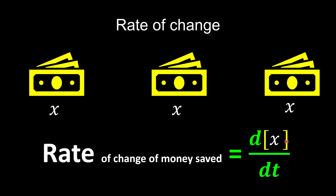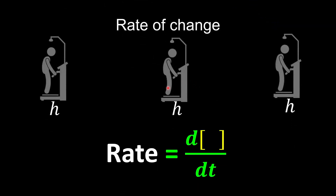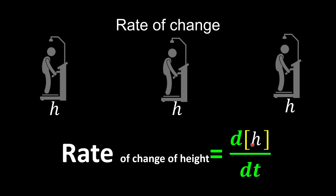dx over dt means what happens to your money in the bank along the time. Next, if h represents your height, we know you're getting taller along the time. So dh over dt studies the rate of change of height — what happens to your height as time changes. Yes, definitely your height increases.